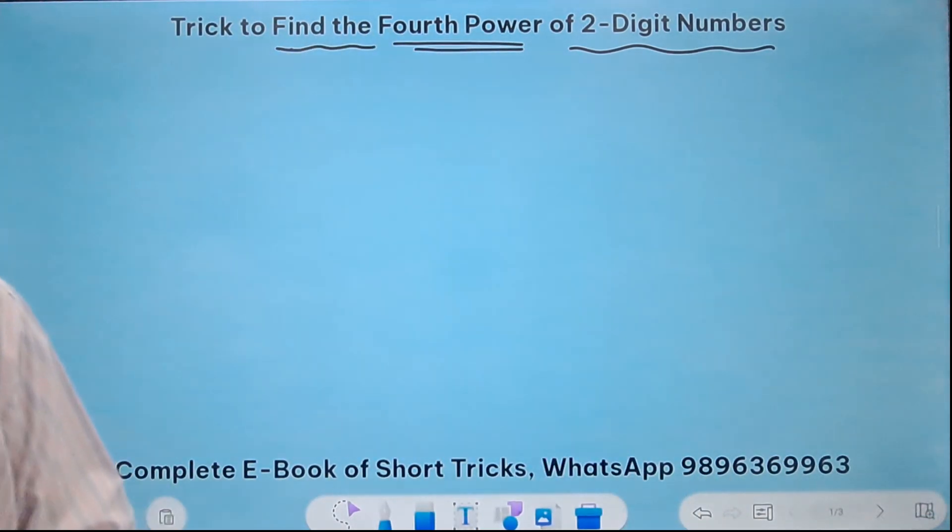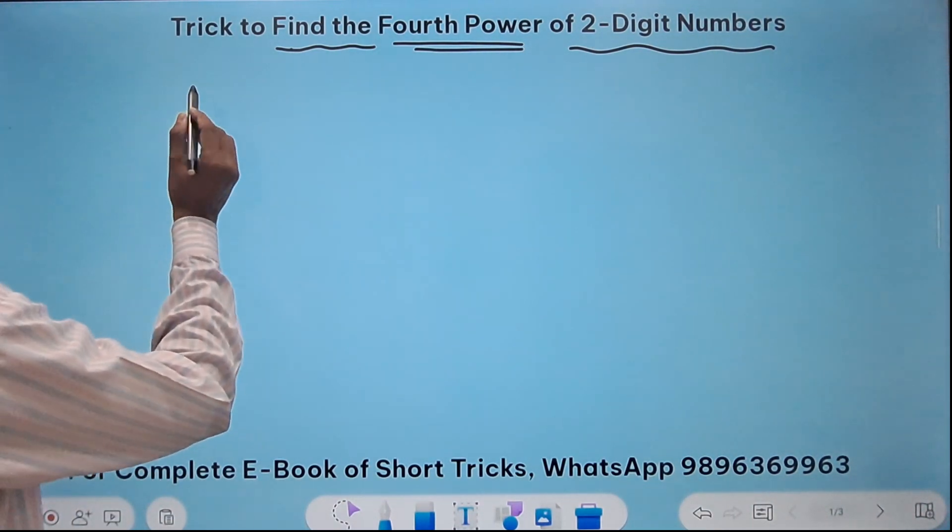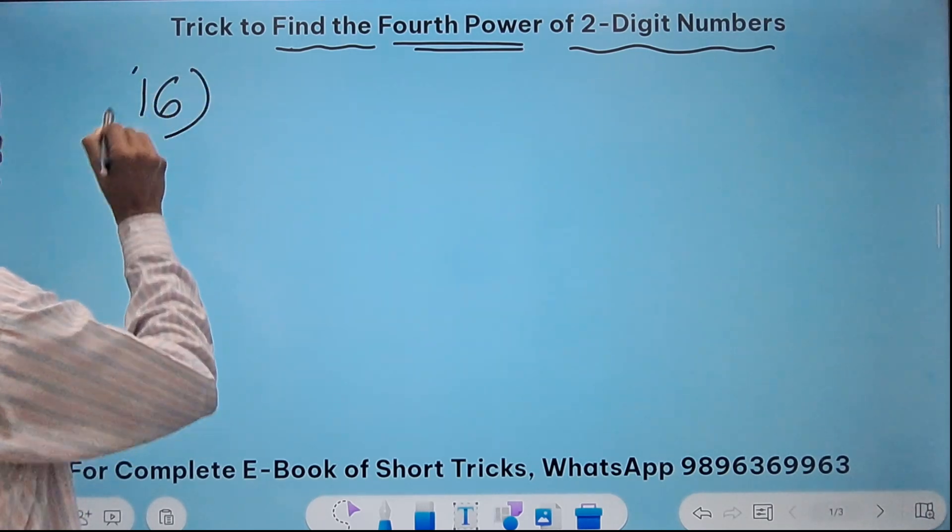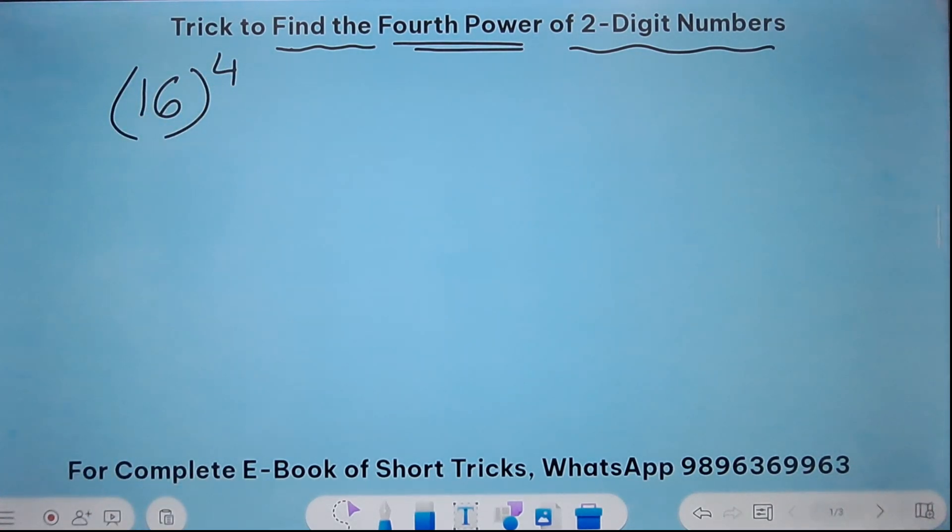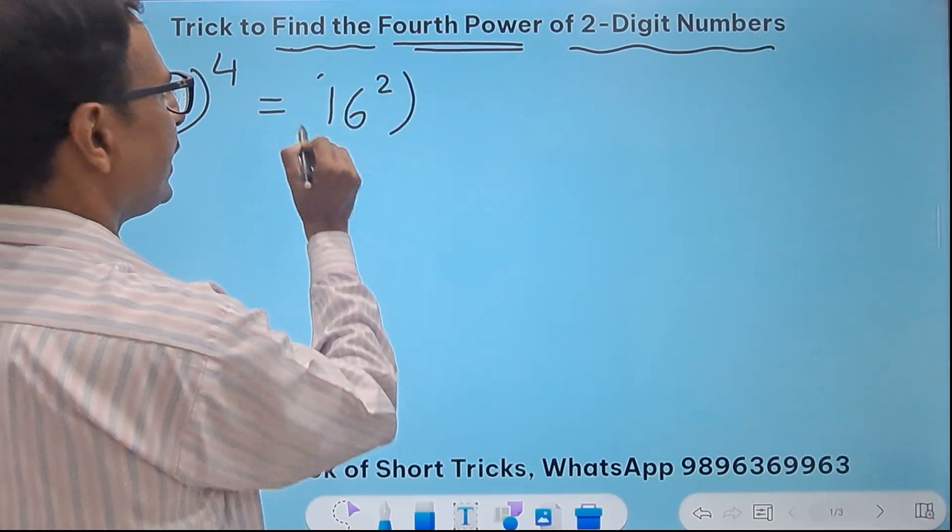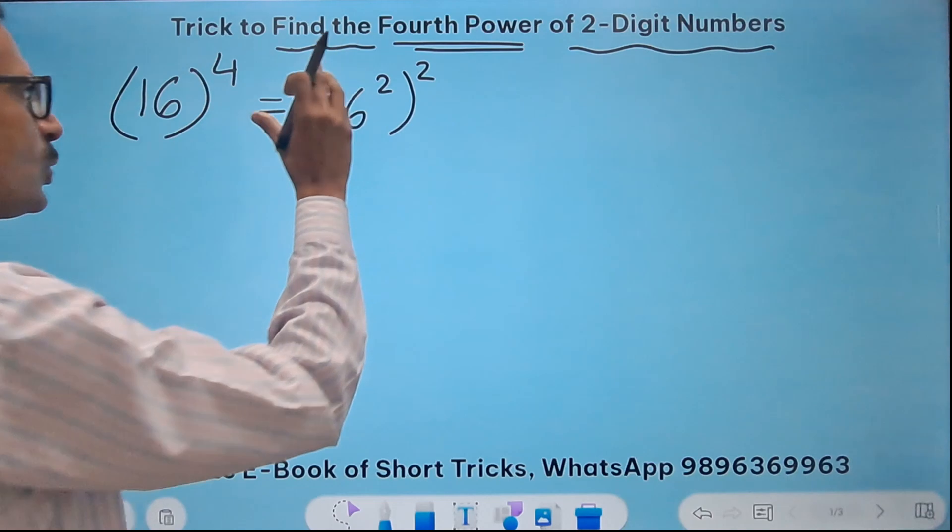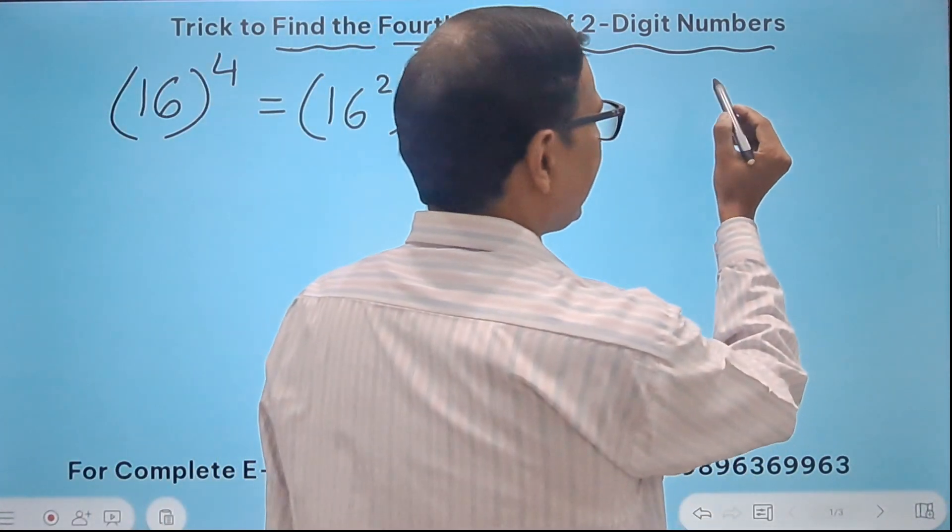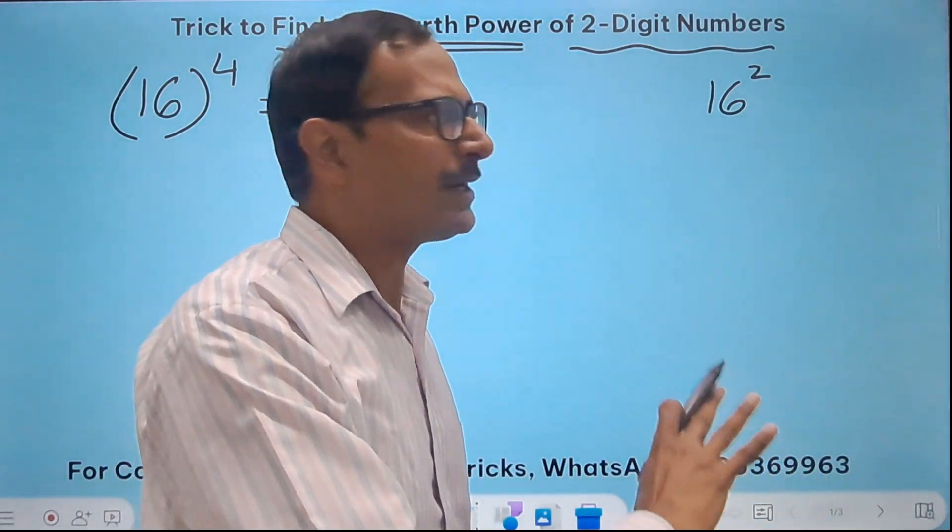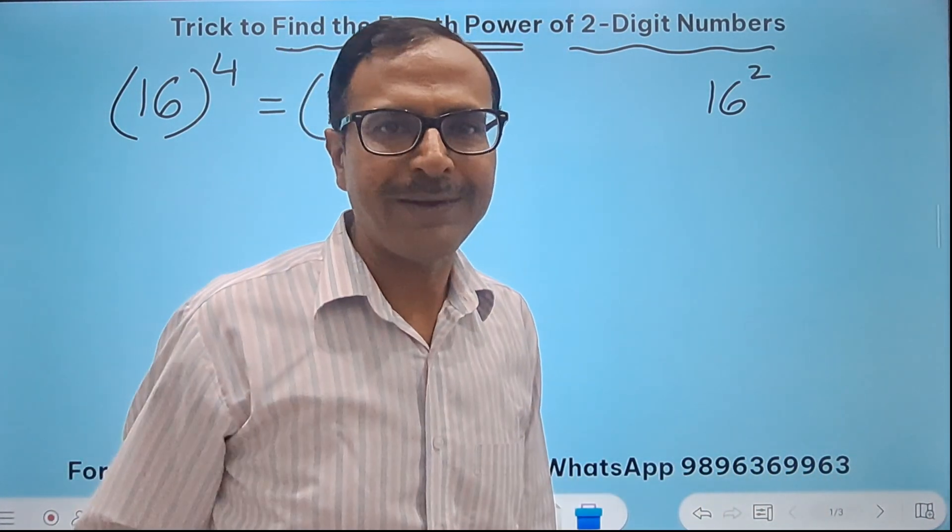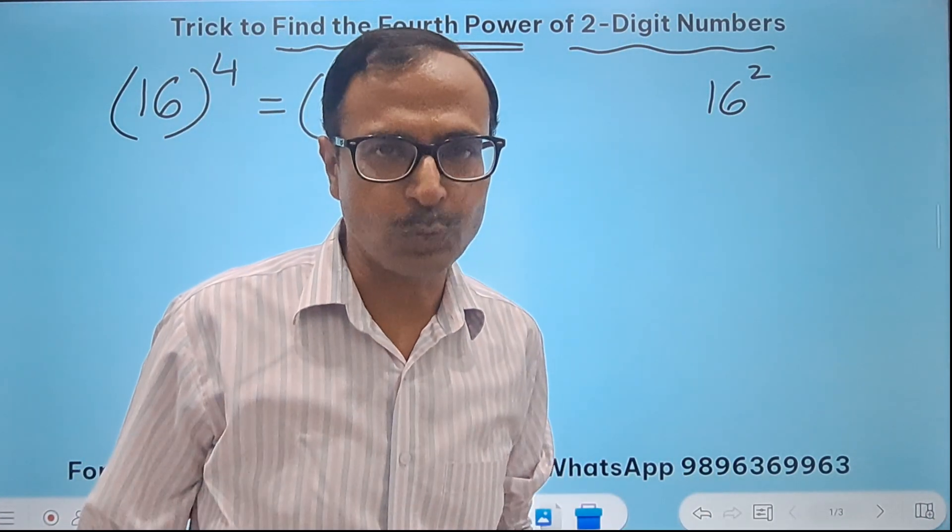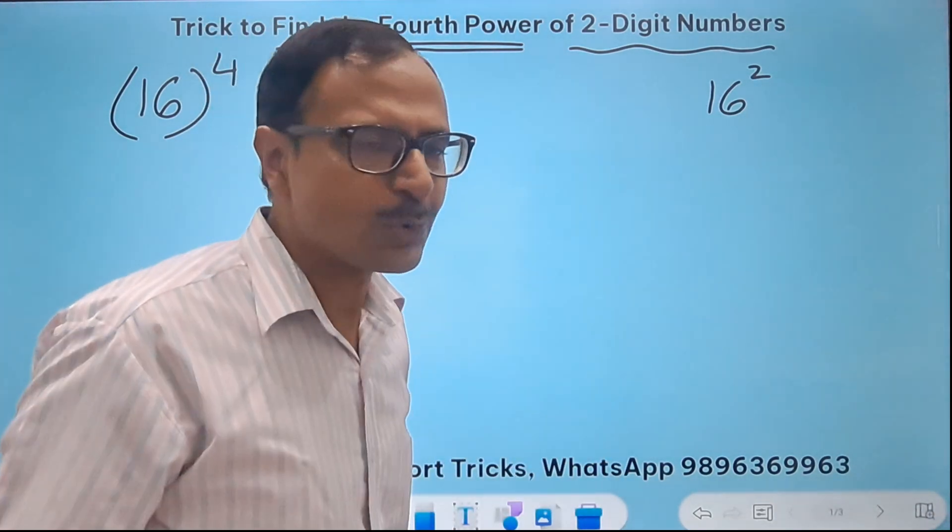Let's take the first example and I'm going to take an easy number first to demonstrate the trick. So the number is 16. So I need to do 16 raised to power 4. I know that 16 raised to power 4 is 16 square squared, right? So the first thing is to get the square of 16. To find the square of 16, most of you already know that it is 256. But even if you don't know it, there are so many different methods through which you can get to the square of two-digit numbers. I'll tell you two methods.